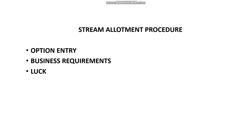Let's start with the stream allotment procedure. For example, assume you joined Accenture on the 1st of December. You'll have your LKM and NJ sessions for the first and second week of the joining period. After that, you'll get a mail for primer assessments. Once you write your primer assessment, within a day or two you'll get a mail asking you to give your stream preferences — respond to this immediately.